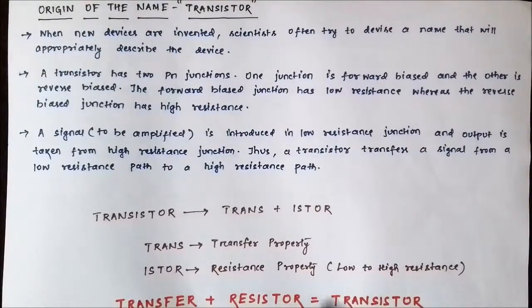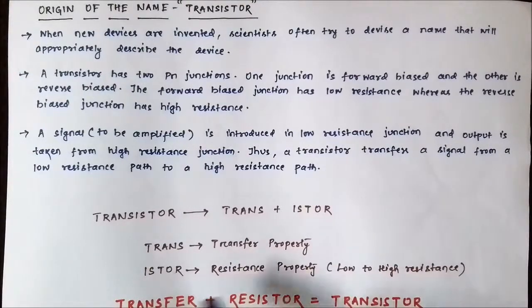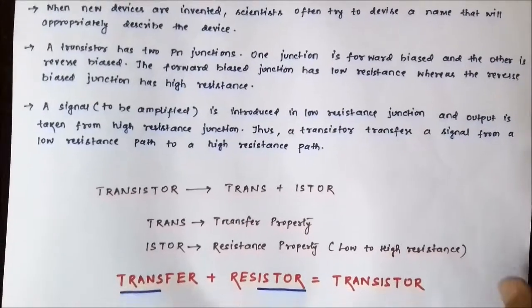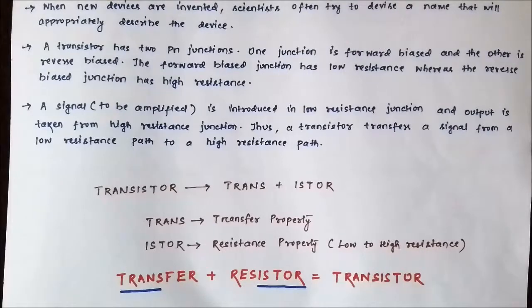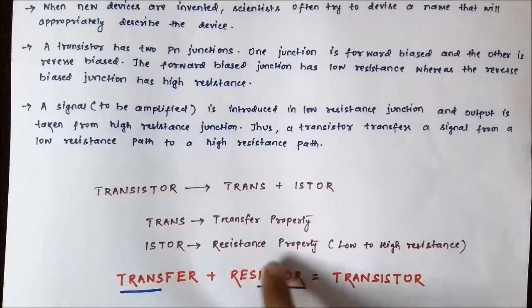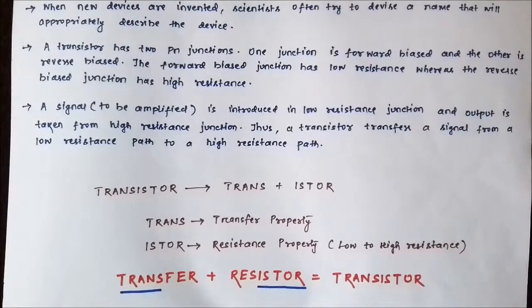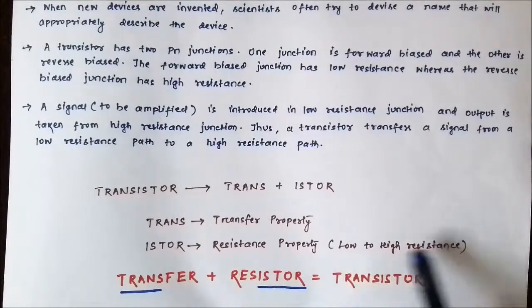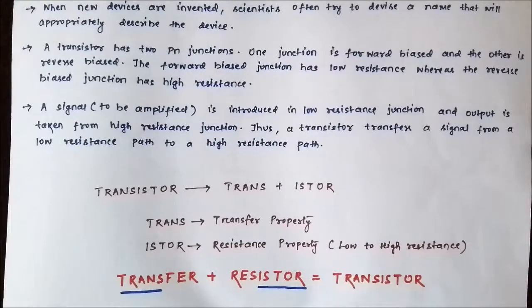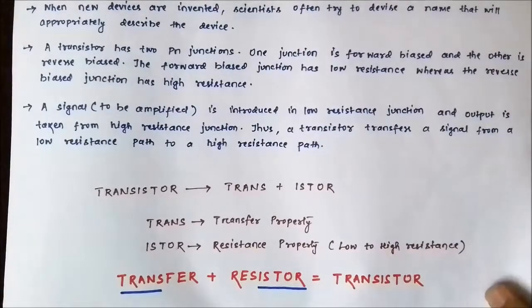When you combine these two properties you get the suitable name 'transistor' — that is, 'transfer' plus 'resistor'. From 'transfer' the 'trans' part is taken, and from 'resistor' the 'istor' part is taken, giving the name 'transistor'. It accurately describes the two unique properties: the transfer of signal from low to high resistance, and the resistance property arising from forward and reverse biasing.